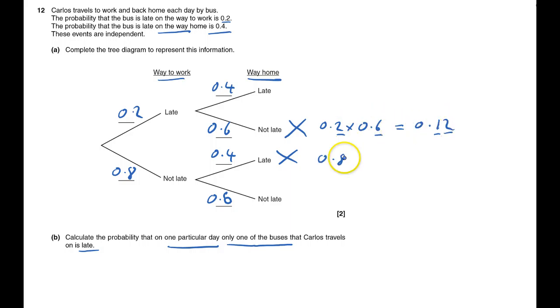This must be 0.8 times 0.4, which equals 32, two numbers, 0.32. And then it's either that route or this route, so I add them, which gives me 0.44. And that's the answer for part B, and that's done.